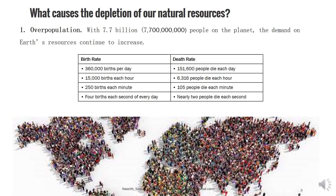Looking at the status quo of birth rate and death rate: there are 3,60,000 births per day but only 1,51,600 people die each day. That is 15,000 births each hour and 6,316 deaths each hour. 250 births each minute, 105 deaths each minute, and 4 births each second — nearly 2 people die each second.